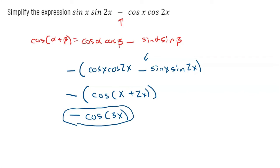Really take the time to understand how I did that — I was basically using my formula in reverse. I know that when I have cosine of an angle times cosine of an angle, minus sine of an angle times sine of an angle, I can work backwards and add those two angles together inside a cosine. So I took x plus 2x to get 3x, giving negative cosine of 3x.